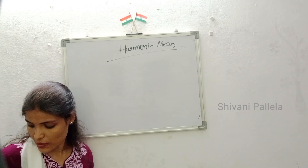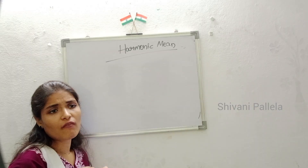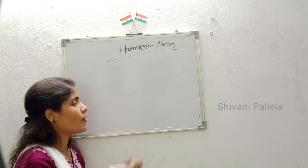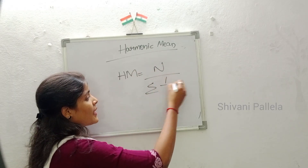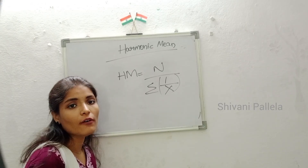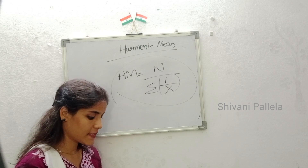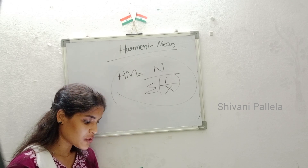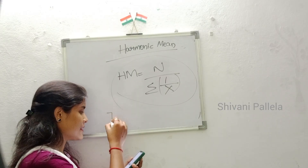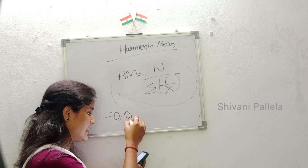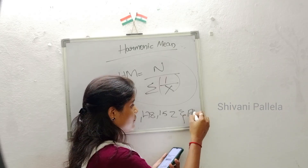Now we will discuss harmonic mean. The formula for harmonic mean is: HM = n / Σ(1/x). We will apply this to a question. X values given are: 70, 90, 178, 152, and 174. We need to find the harmonic mean.